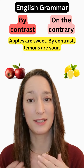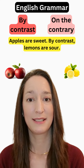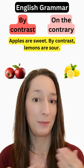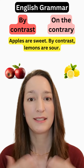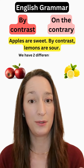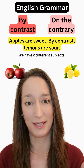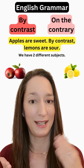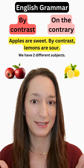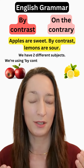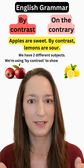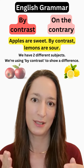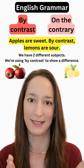Apples are sweet. By contrast, lemons are sour. We have two different subjects — apples and lemons — and we're using 'by contrast' to show a difference: sweet and sour.